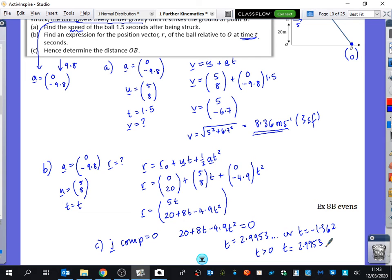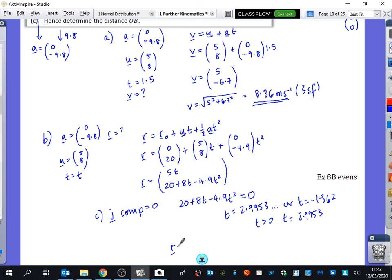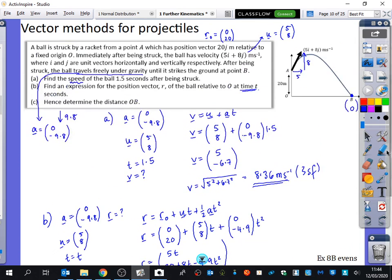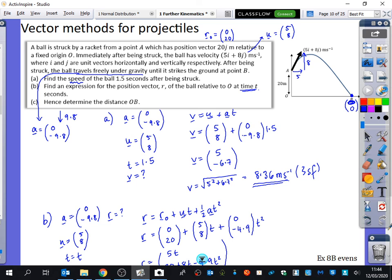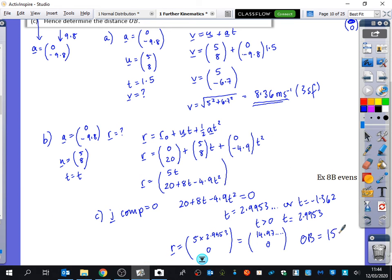What do you now have to do with that value? You then have to substitute that back into the position vector. So we now know that R equals 5 times 2.9953. And what would the bottom part be? Zero, because I've just worked out I know it's 0. So we get (14.97, 0). So we get that the distance from O to B, being from here to here, is basically just what this part is. OB is just 15.0 metres to three significant figures.